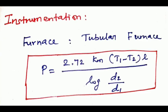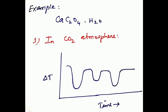The furnace used is a tubular furnace. The formula is P equals 2.72 km times T1 minus T2 times L divided by log d2 by d1, where L is length, km is average thermal conductivity coefficient, d1 is diameter of the heater coil, and d2 is diameter of the furnace shell.